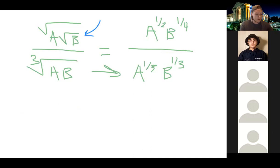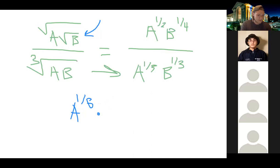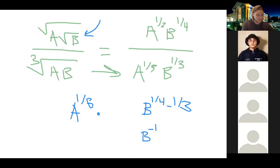We get to A to the one-half divided by A to the one-third, which we rewrite as A to the one-half minus one-third. That's three-sixths minus two-sixths, which is A to the one-sixth — that stays in the numerator. Then we have B to the one-fourth minus one-third, which is three-twelfths minus four-twelfths, giving us B to the negative one-twelfth.